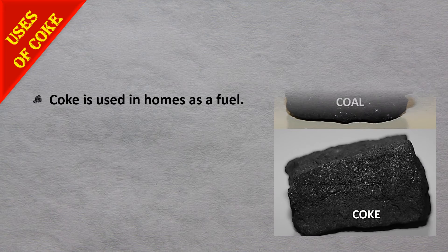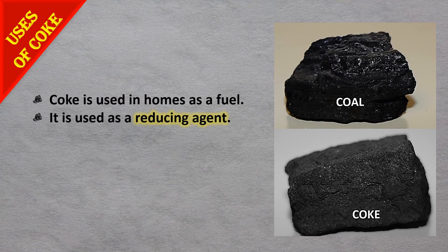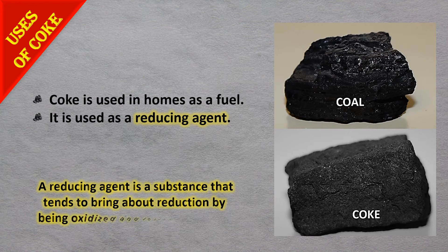Uses of coke: coke is used as a fuel in homes for burning to get heat. It is also used as a reducing agent — a reducing agent is a substance that brings about reduction by being oxidized, that is, by taking oxygen and losing electrons.